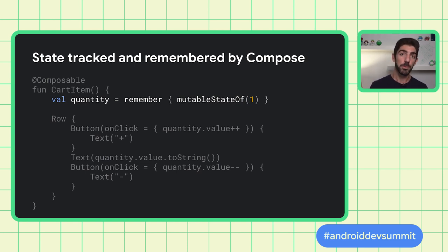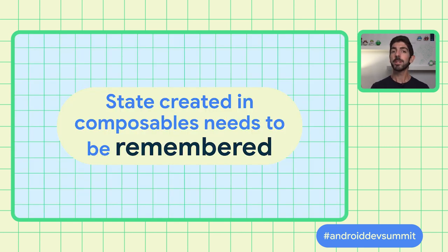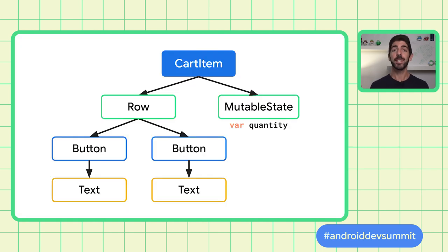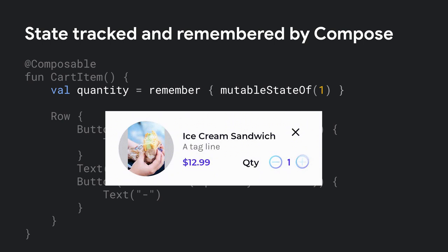To reuse the quantity state across recompositions, we need to make it part of the composition. You can store objects in the composition by using the remember composable function. It can be used to store both mutable and immutable objects. The state will be part of the composition and reused when the function recomposes. As you can see now, our cart item works as expected — since quantity is preserved across recompositions, the new mutated values appear on the screen.